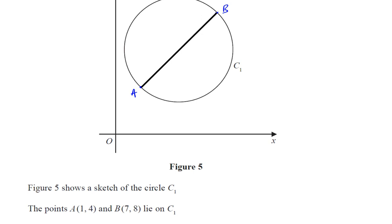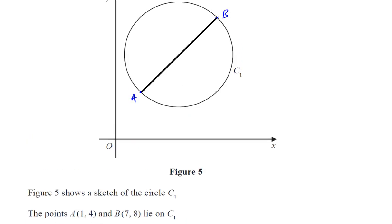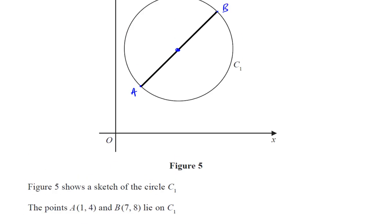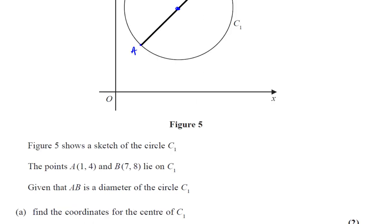Given that AB is the diameter of the circle C1, find the coordinates for the center of C. We know that that is definitely the diameter, so it passes through the center of the circle. The center of the circle C will be the center of the diameter. So it will be the midpoint of AB. Basically, what they're asking us to find is the midpoint of AB.